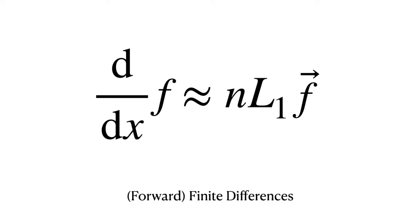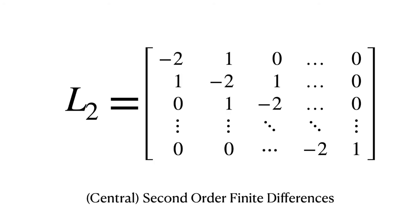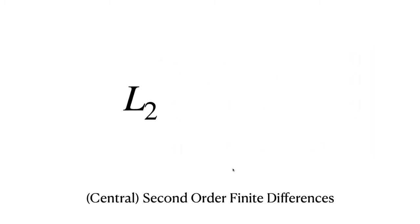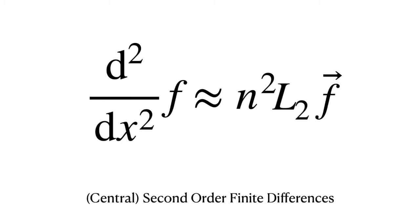Similarly, there is a discrete approximation of taking the second derivative, given by a matrix L₂. L₂ has minus 2s on the main diagonal and 1s on both the upper and lower diagonals — I made a small correction here, those entries should be minus 2 and 1. This is called the second order finite differences matrix. You can use L₂ to generate functions whose second derivative is normally distributed, simply by replacing L₁ with L₂ and n with n².